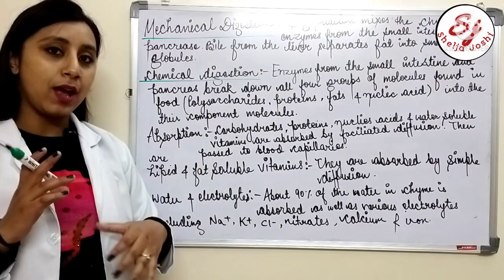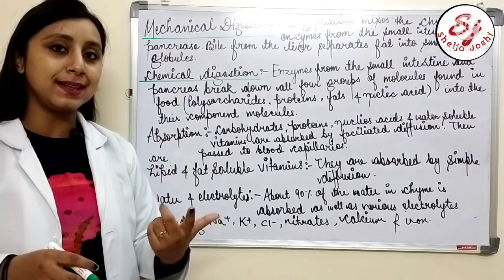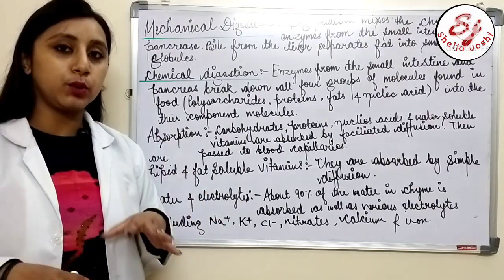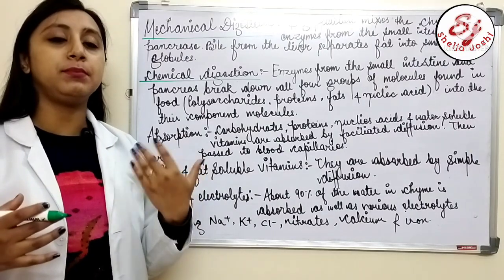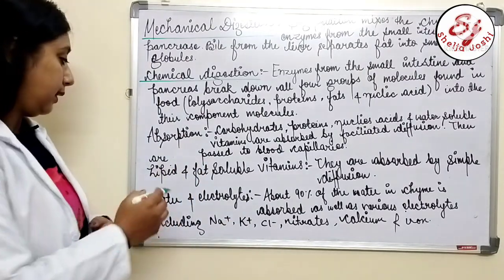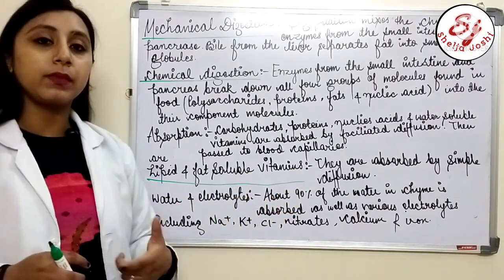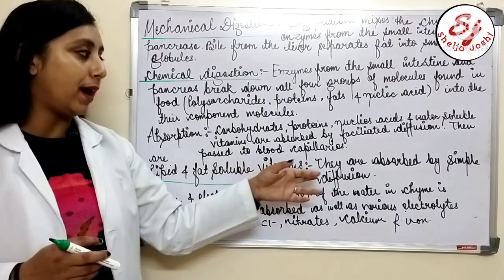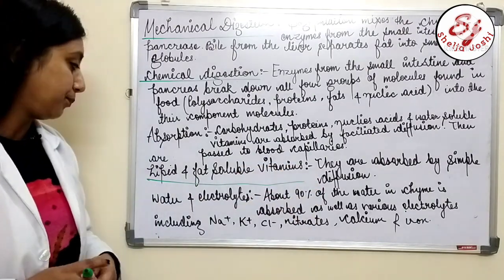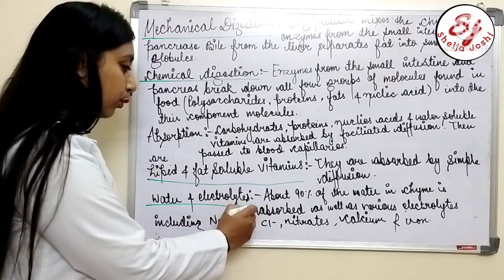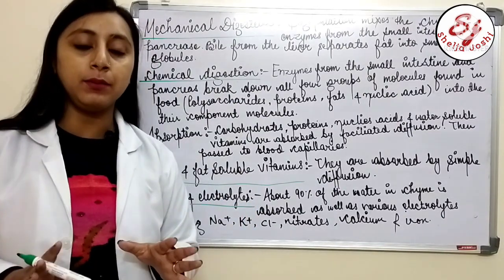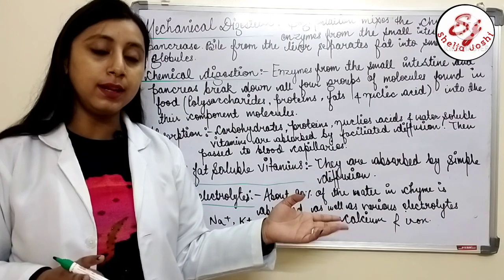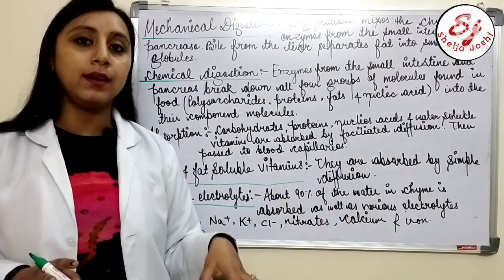In the absorption process, carbohydrates, proteins, nucleic acids, and water-soluble vitamins — vitamins B and C — are absorbed through simple and facilitated diffusion into blood capillaries. Lipids and fat-soluble vitamins — vitamins A, D, E, and K — are absorbed by simple diffusion. About 90% of the water in chyme, as well as electrolytes such as sodium, potassium, chloride, nitrate, calcium, and iron, are also absorbed by the small intestine.